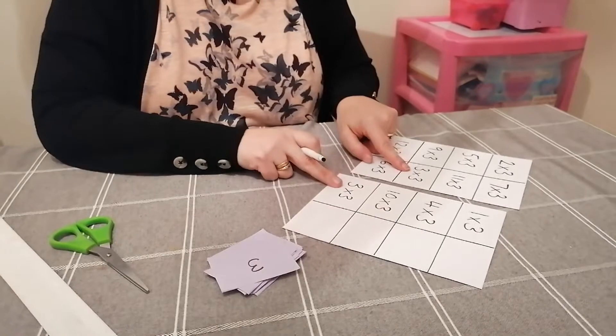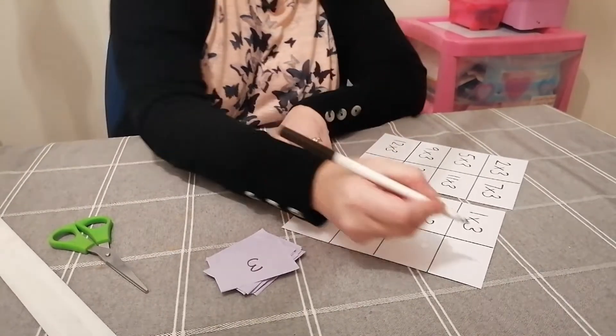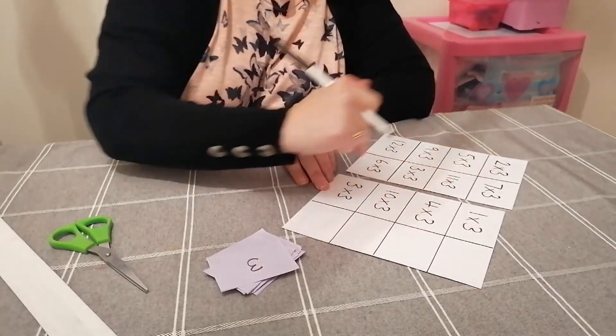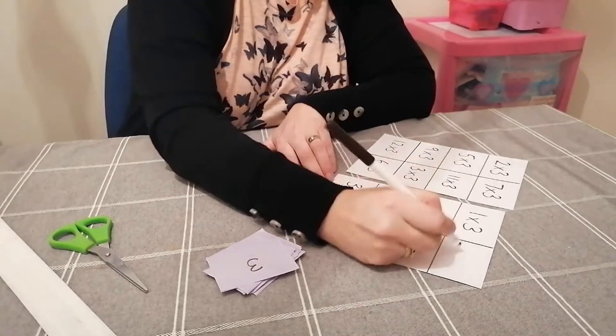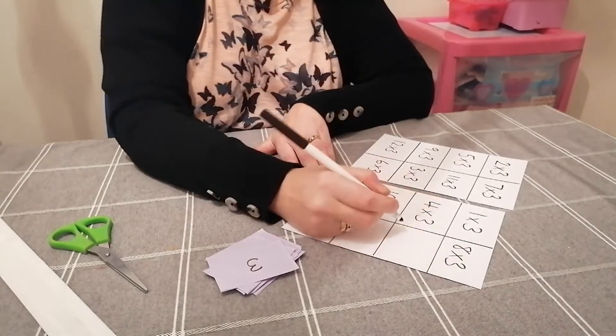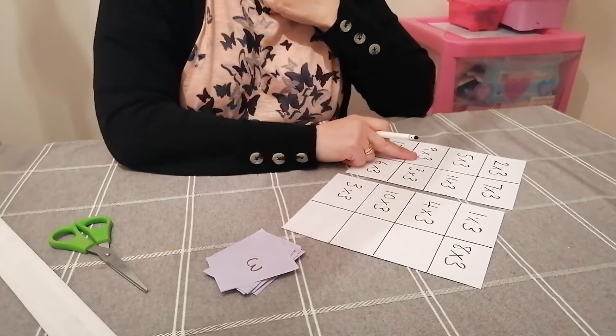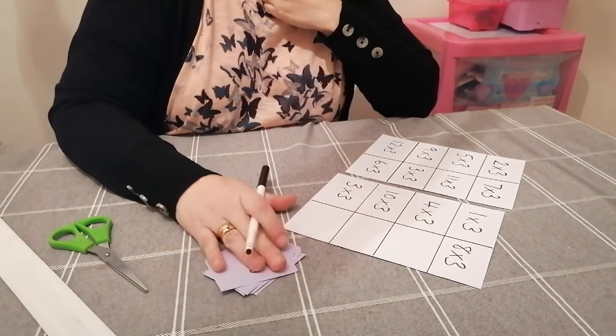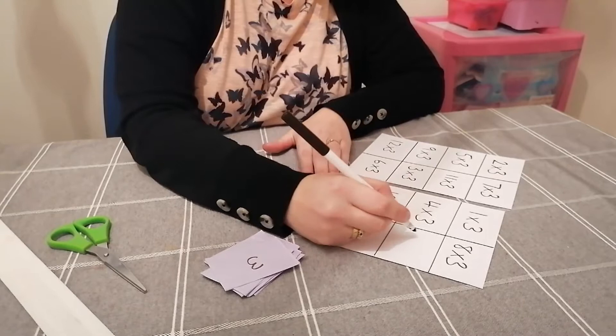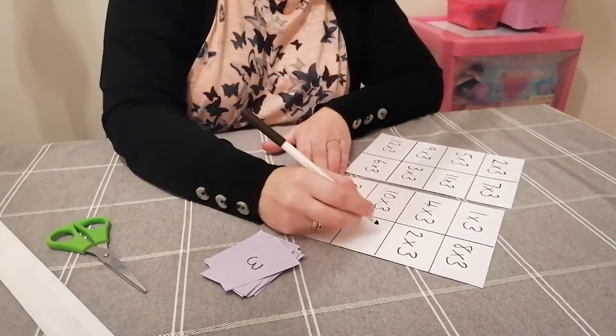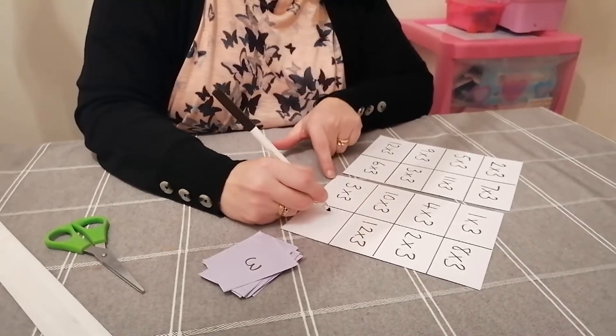We've got some the same, so we can see three times three here. Let's carry on. What are we missing? One times, two times, three times, four times, five times, six times, seven times, eight times - we haven't got eight times three - nine times, ten times, eleven times, twelve times. So now I can put three different ones here. I'm going to choose two times three, twelve times three, and six times three.